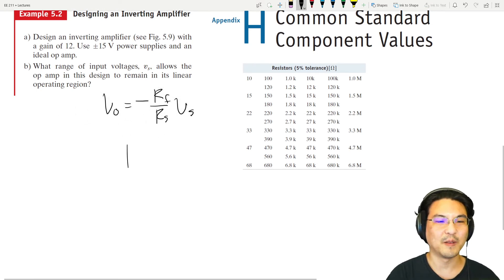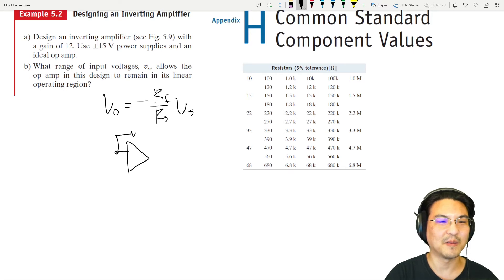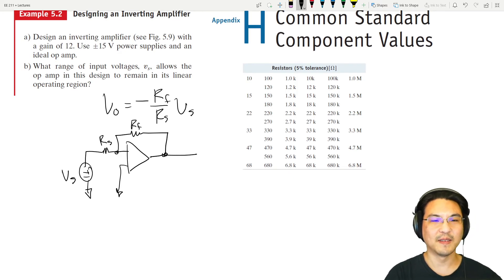See this—if we design it to look like this, where this is the input and this is the output. See how this is some kind of gain, but it's opposite—that's why it's inverting. If this is positive, the output is negative and vice versa. And if RF is, for example, 12 times more than RS, then there's going to be a gain of 12.